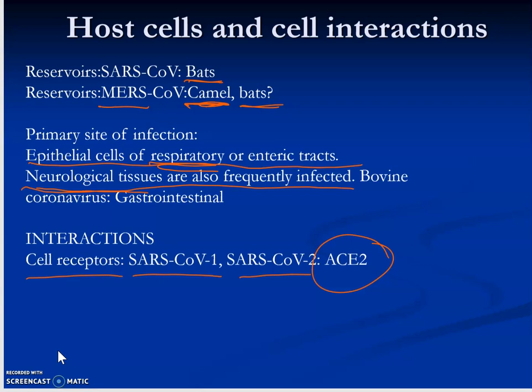There is also a bovine version of coronavirus that causes gastrointestinal problems. One interesting thing to note is the cell receptors the virus binds to — specifically the ACE2 receptor. ACE stands for angiotensin-converting enzyme, which converts angiotensin-1 to angiotensin-2, leading to blood vessel diameter reduction and aldosterone release, both causing an increase in blood pressure. ACE2 is mostly expressed in lung tissue, and COVID-19 gains entry into the respiratory epithelium and infects the lungs by binding to the ACE2 receptor.